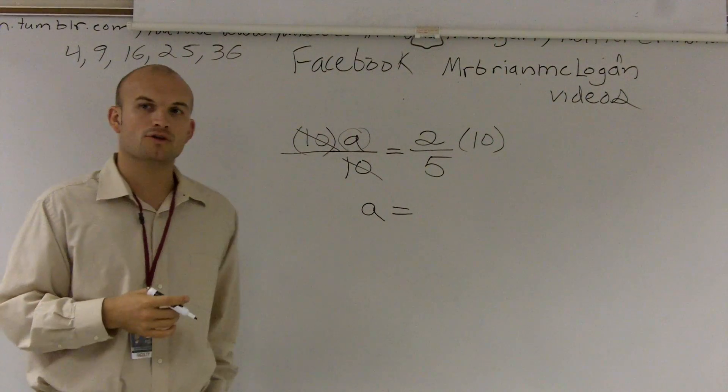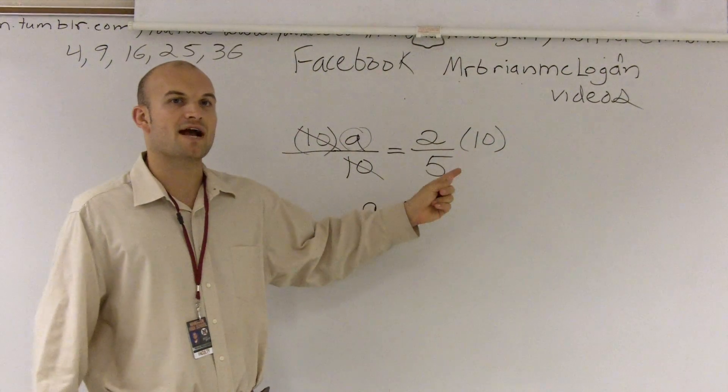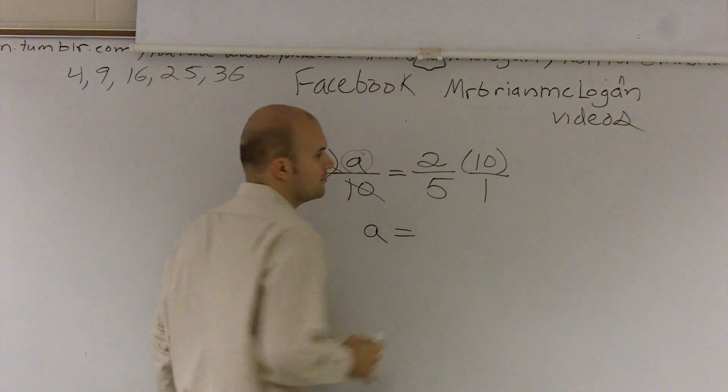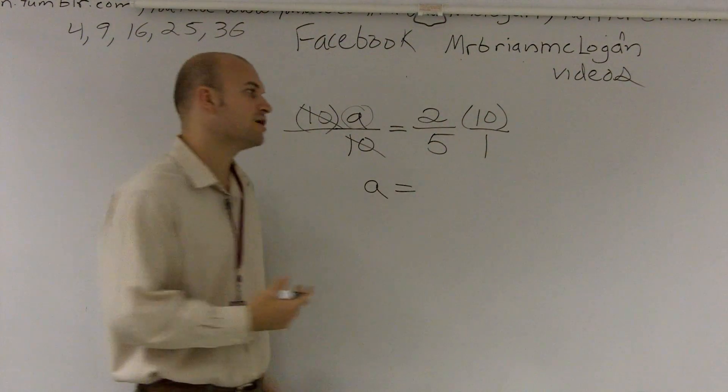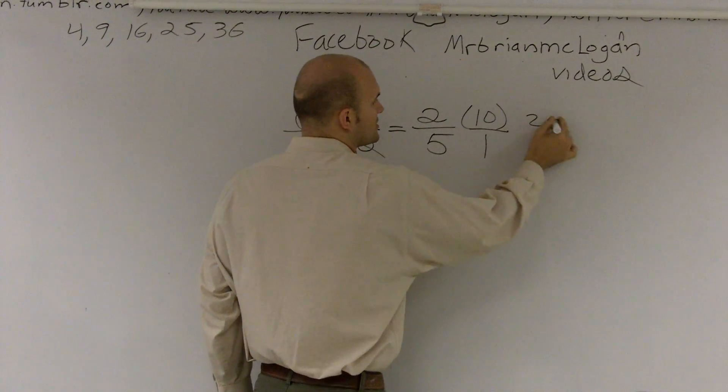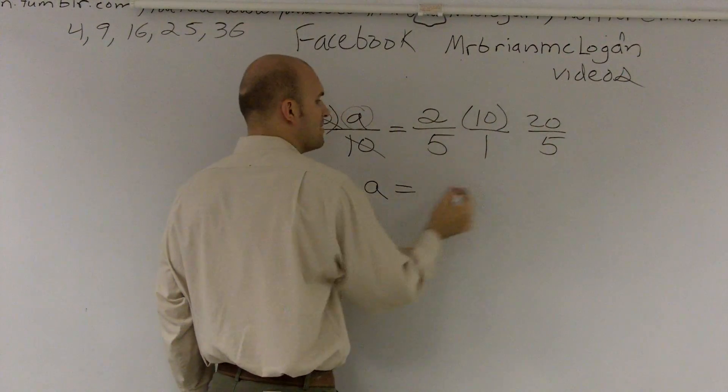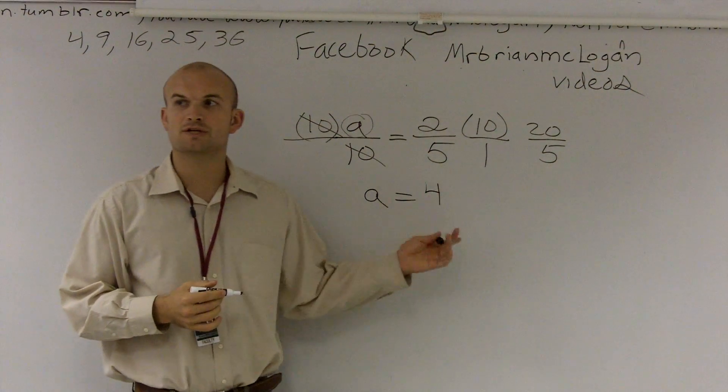And then, a lot of students run into trouble multiplying a whole number times a fraction. When you have a whole number times a fraction, change your whole number into a fraction. Put it over 1. Then, as you remember, when we multiply fractions, you just multiply across. 2 times 10 is 20. 5 times 1 is 5. Well, 20 divided by 5 gives you 4. So you can reduce your fraction.